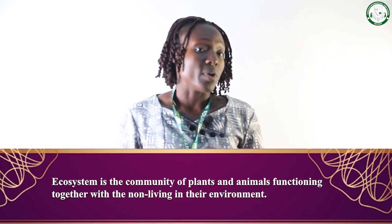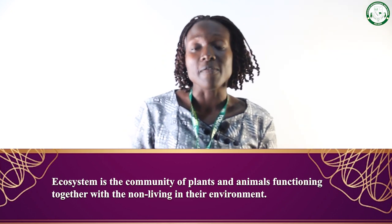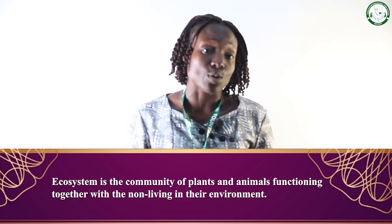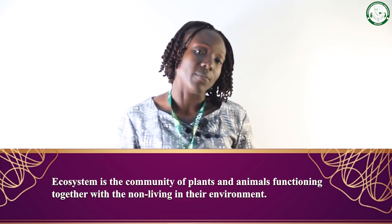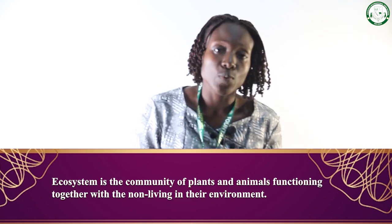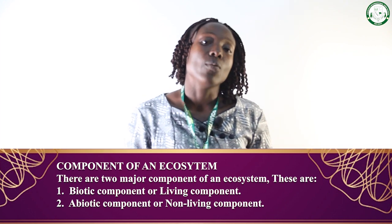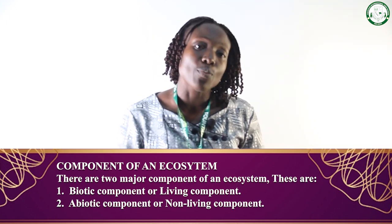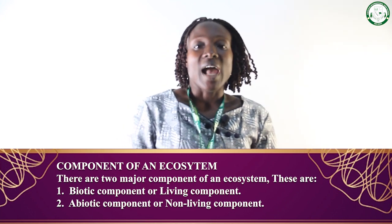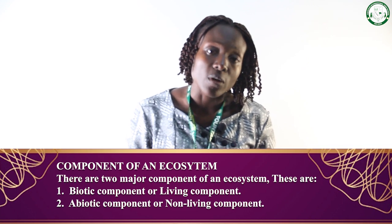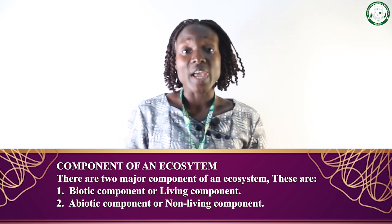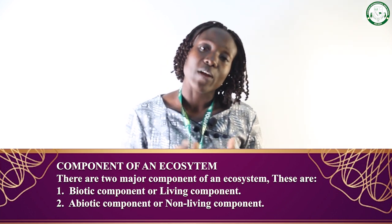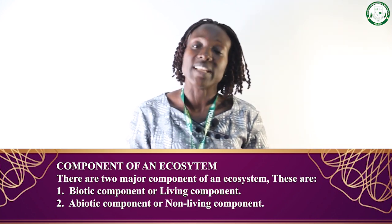In an ecosystem, we have both plants and animals with non-living factors. Plants and animals are the living factors, so we have two major components of an ecosystem: the living components, which are the biotic factors — plants and animals — and the non-living components, which are called abiotic factors.